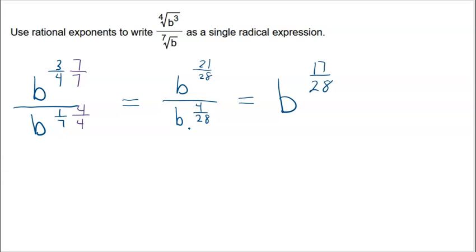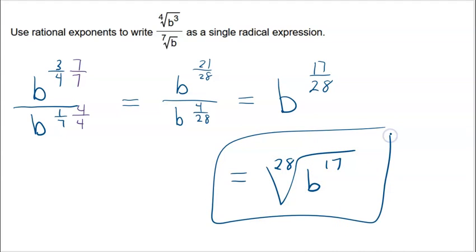Now, to write this as a single radical expression. How about this? That's going to be the twenty-eighth root of b to the seventeenth power. Now, the next issue is you've got to type that in the system. But, there you go. So, that's dealing with rational exponents to write a single radical expression.